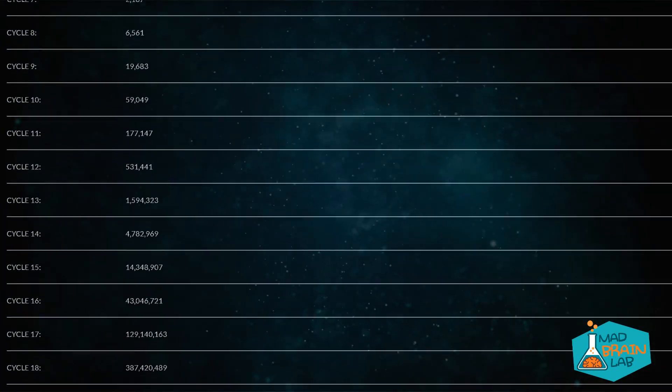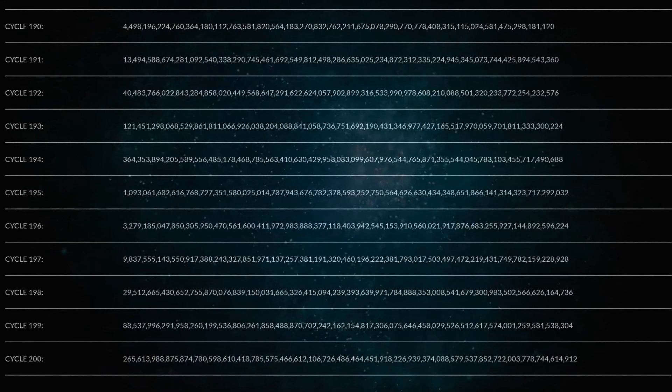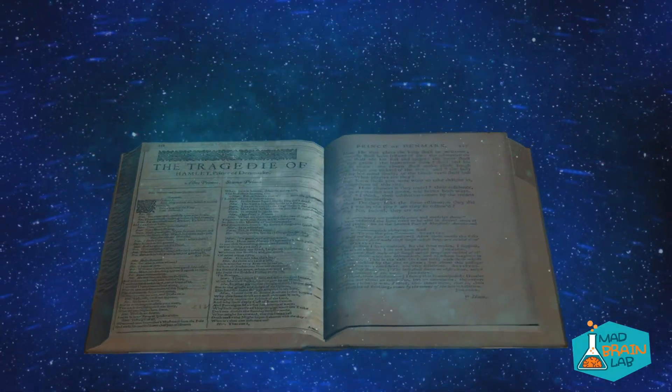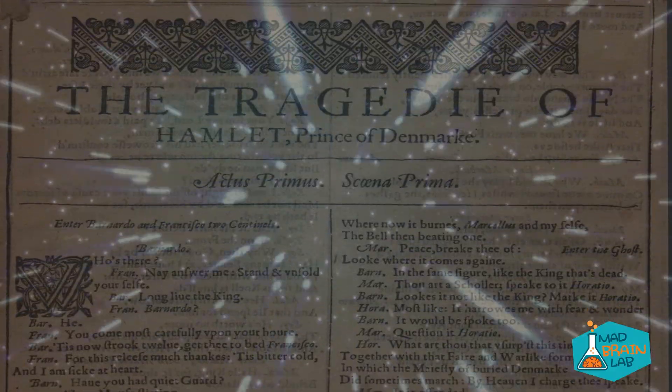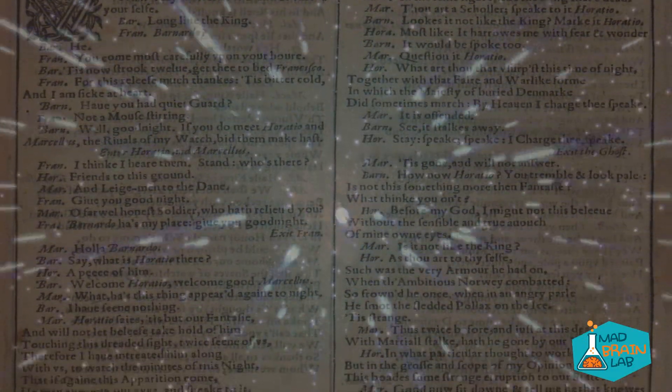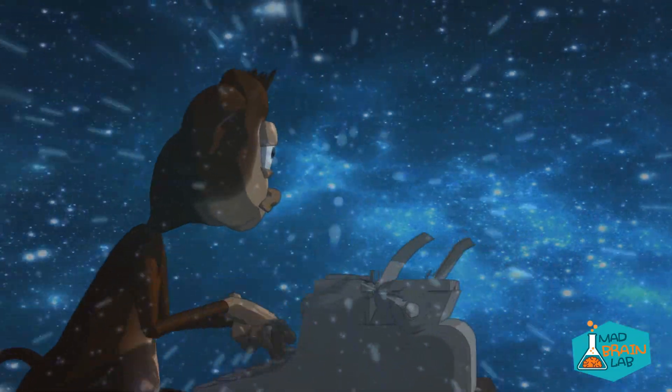These numbers on the screen represent the amount of monkeys created with each reproduction cycle. We effectively need 9.7 million cycles to get us 82% of the monkeys we require to write the work of Shakespeare. After only two weeks of monkeys reproducing, we will get the golden monkey. The monkey that will reproduce the work of Shakespeare in about two months.